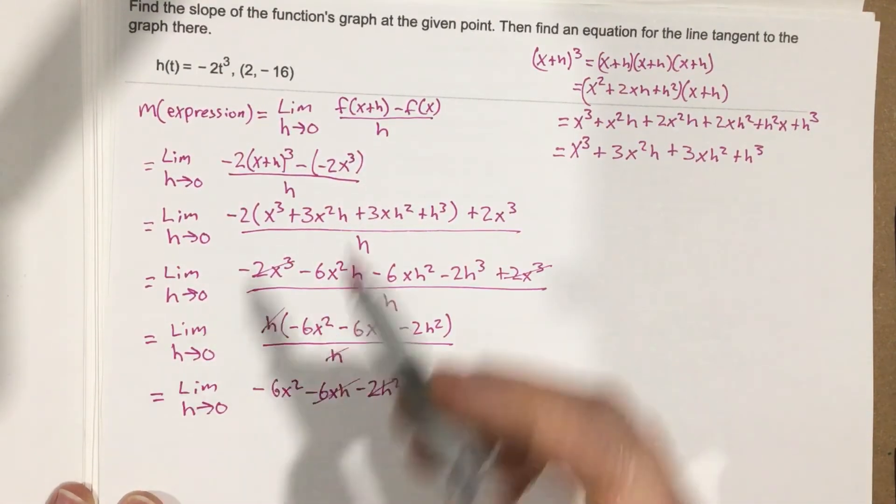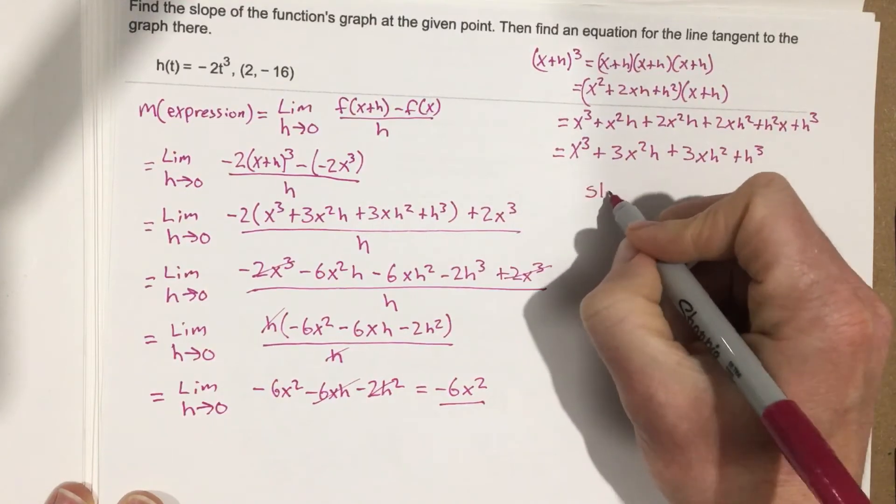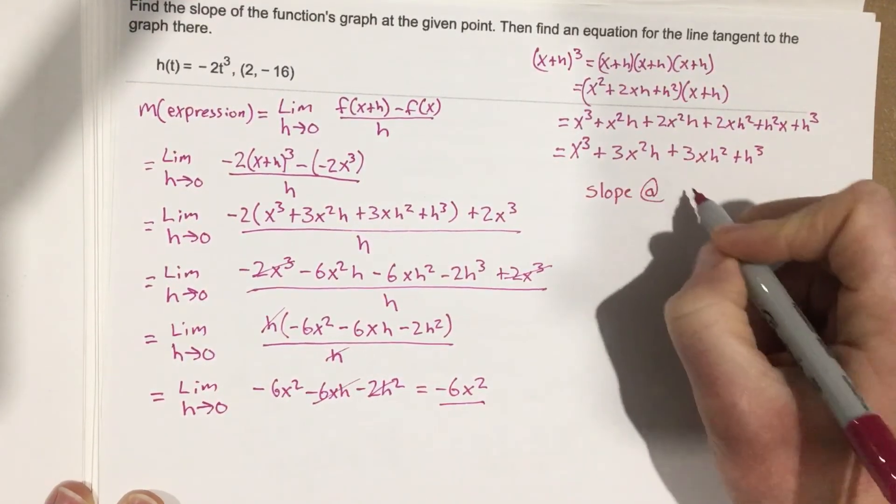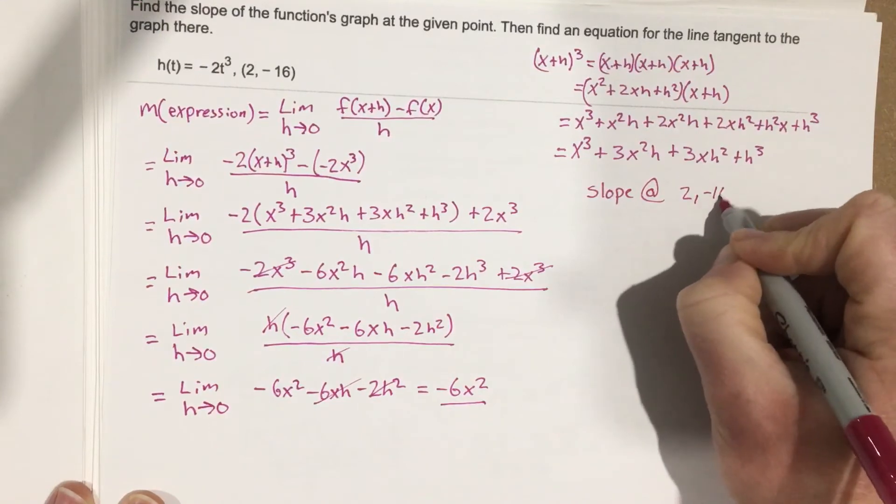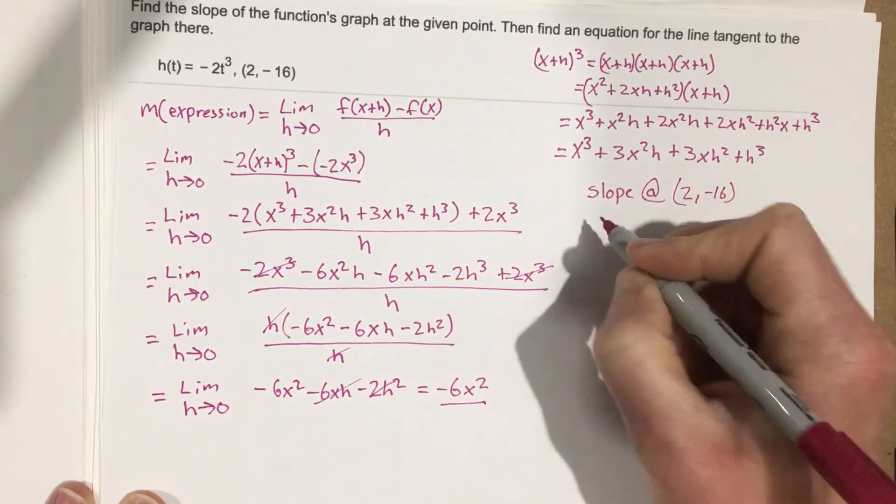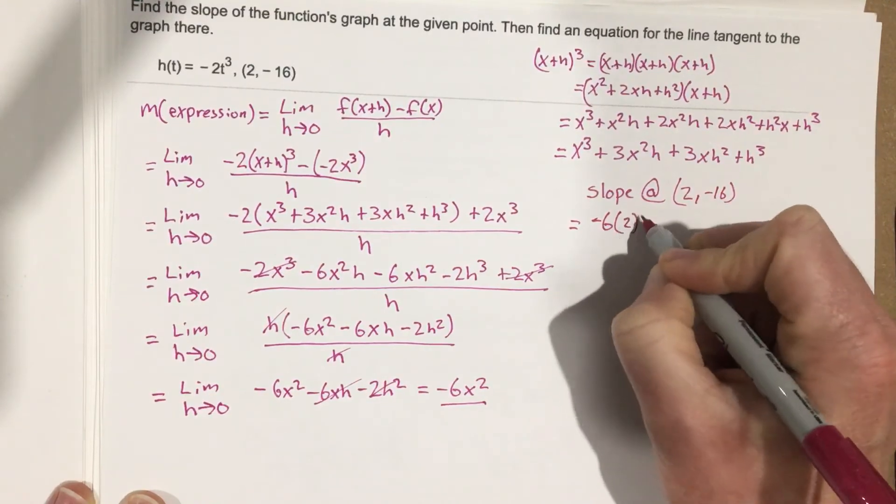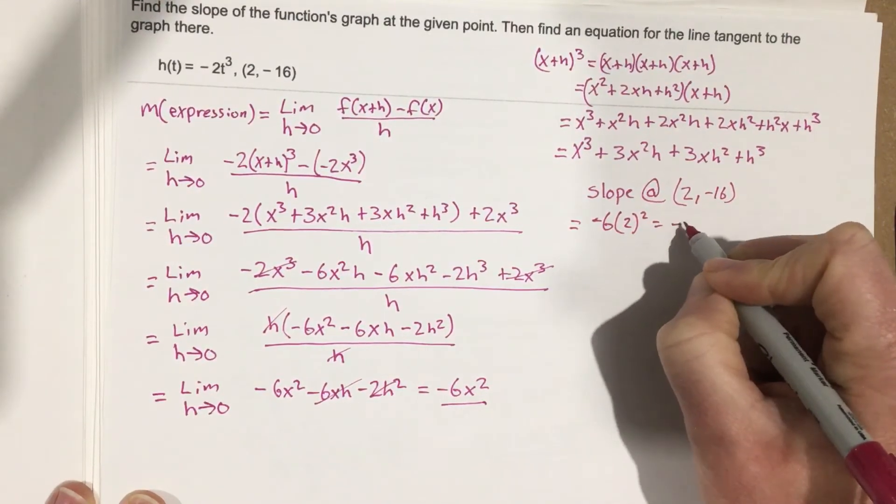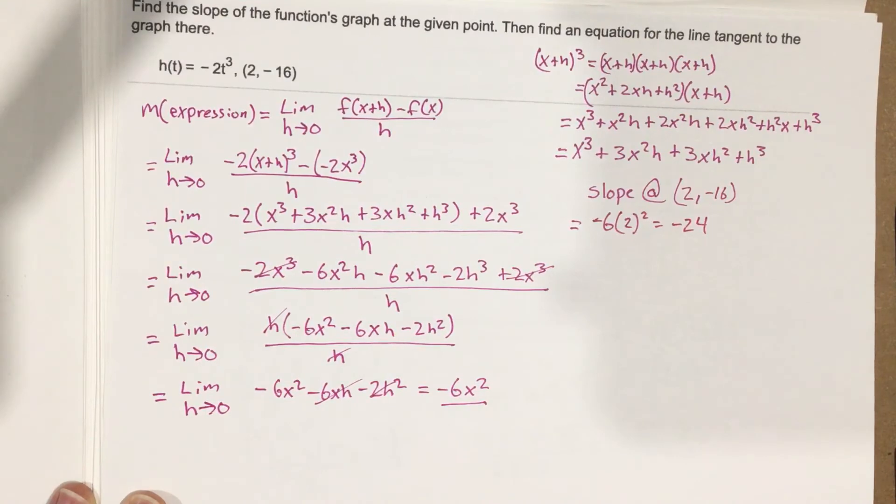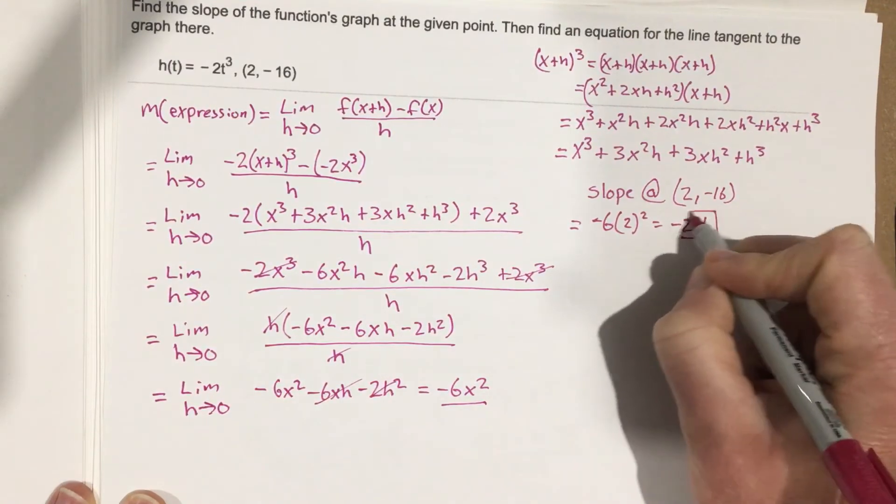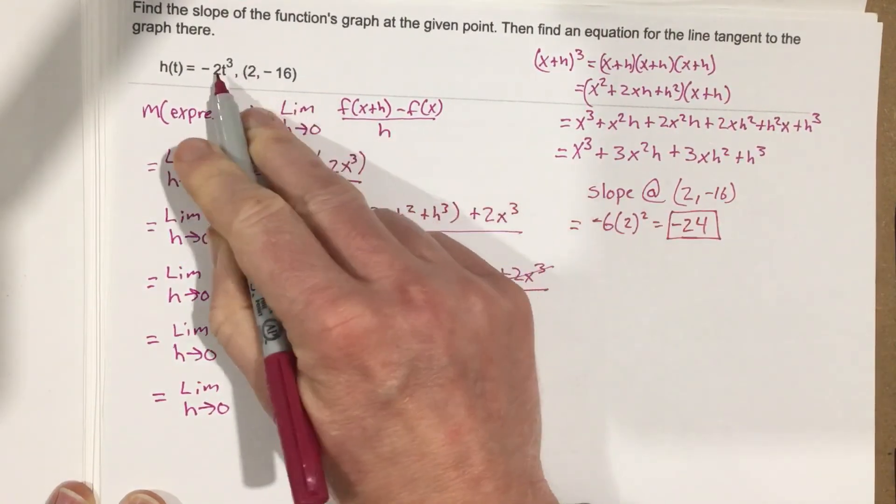Now, we need to go through and find the slope at 2, negative 16. So that means we're going to say that that's going to be negative 6 times 2 squared, which is negative 24. So that's the slope at this point on this line.